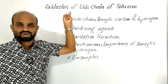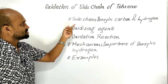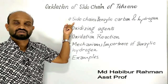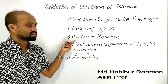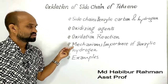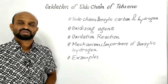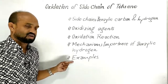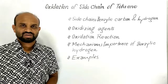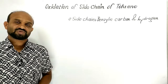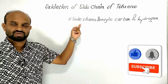Today's lesson is about the oxidation of the side chain of toluene. The points to be discussed are: side chain, benzylic carbon, benzylic hydrogen, oxidizing agents, oxidation reaction of toluene, mechanism of the reaction highlighting the importance of benzylic hydrogen, and finally some examples of oxidation of side chain.